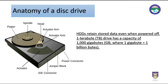Capacity is specified in units corresponding to powers of 1000. A 1TB drive has a capacity of 1000 GB; 1 GB is 1 billion bytes. Typically, some of a hard disk drive's capacity is unavailable to the user because it is used by the file system and the computer operating system, and possibly inbuilt redundancy for error correction and recovery.